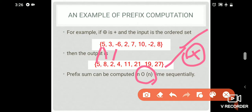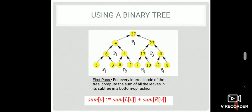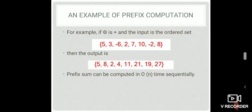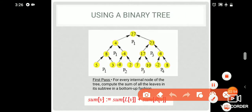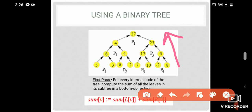We will do the order of n times. We are going to use a binary tree. We have values: 5, 3, minus 6, 2, 7, 10, minus 2, 8. We use a binary tree from bottom to top. At the bottom there is a computation like 5 plus 3 equals 8. Then 8 minus 6 equals 2.